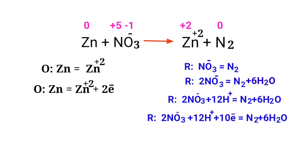The electrons lost in the oxidation half reaction must equal the electrons gained in the reduction half reaction. The oxidation half reaction has 2 electrons, while the reduction half reaction has 10 electrons. To equalize them, multiply the oxidation half reaction by a coefficient of 5.